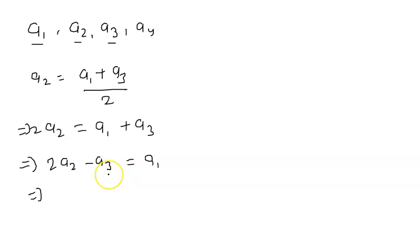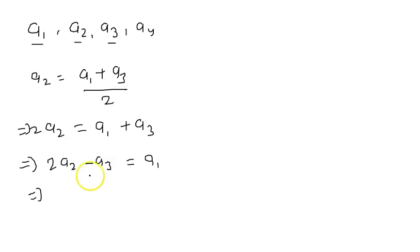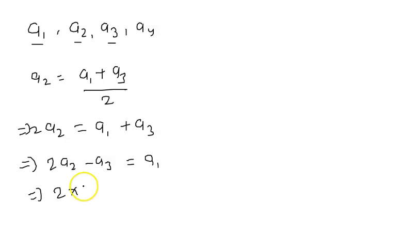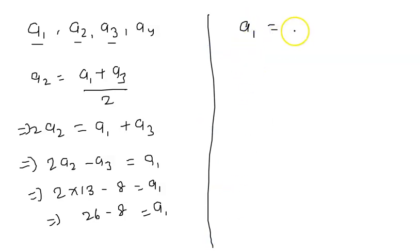Now putting in the values: a2 is 13 and a3 is 8, so a1 equals 2 times 13 minus 8, which is 26 minus 8, giving us a1 equal to 18. So 18 is the correct answer. Thank you.